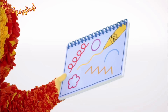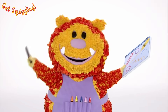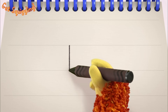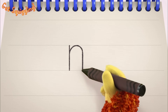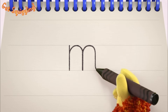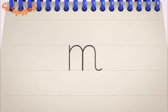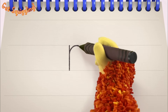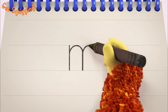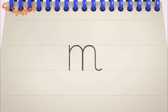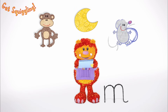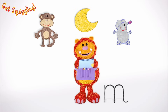Have you got your squiggle pads and squiggle sticks ready? Let's get squiggling! Holding your squiggle stick like this, move it down, up, over, and down, up, over, down and flick — the letter M! Let's squiggle it again: go down, up, over, and down, up, over, down and flick — the letter M! Shall we squiggle some things that start with the letter M? A monkey, a moon and a mouse — they all begin with the letter M!